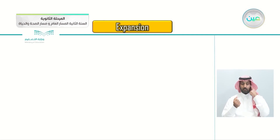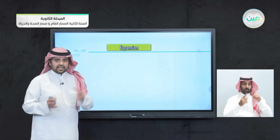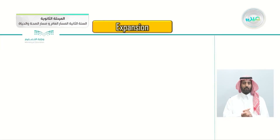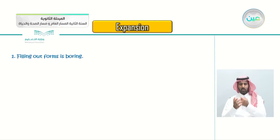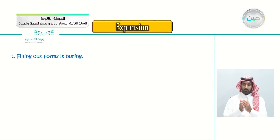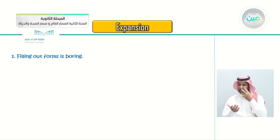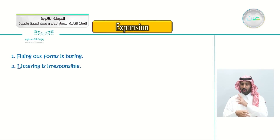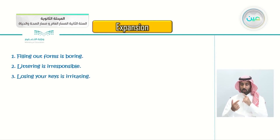Try to come up with sentences using words from Box A and Box B. For example, number one: filling out forms is boring. Turn Box A into a gerund by adding -ing: filling out forms is boring. Number two: littering is irresponsible — littering means throwing trash in the street. Number three: losing your keys is irritating — just as the example shows.